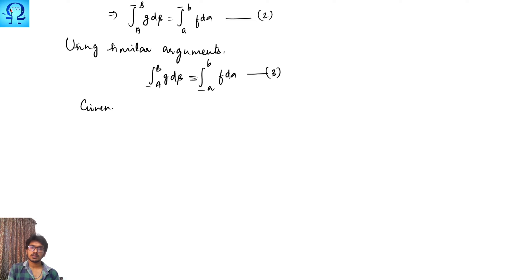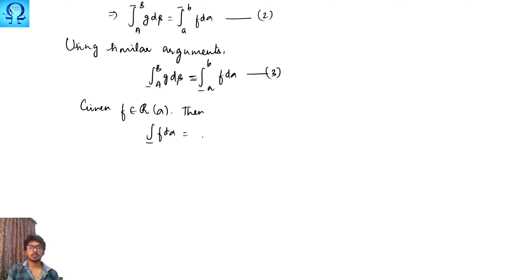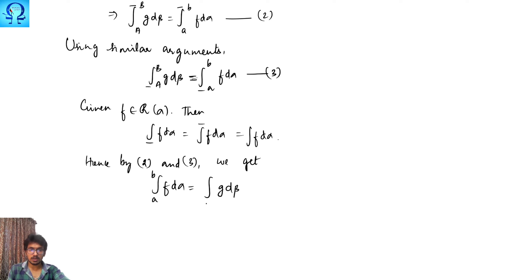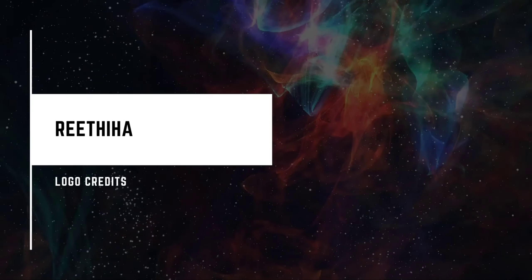Since f is Riemann-Stieltjes integrable — one of the given suppositions — the lower integral of f dα equals the upper integral of f dα, which equals the integral of f dα. Hence, from equations 2 and 3, the integral of g dβ over [A, B] equals the integral of f dα over [a, b], and this completes the proof of the theorem.